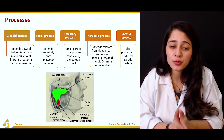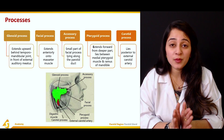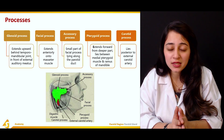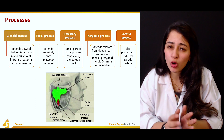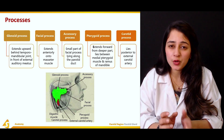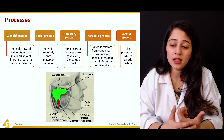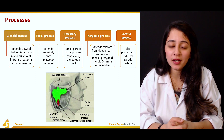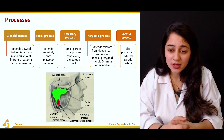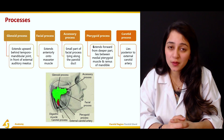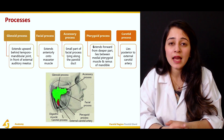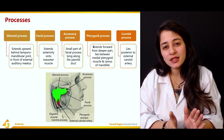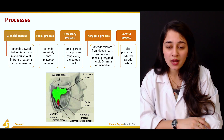In summary, the parotid gland has five processes: the glenoid process, the facial process anterior to the masseter muscle, the accessory process — a small part of the facial process associated with the parotid duct, the pterygoid process lying between the medial pterygoid muscle and the ramus of the mandible, and the carotid process lying posteriorly to the external carotid artery.